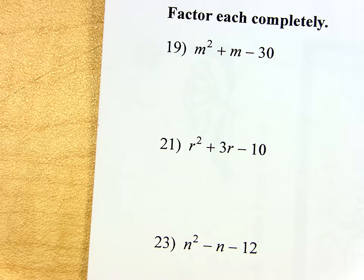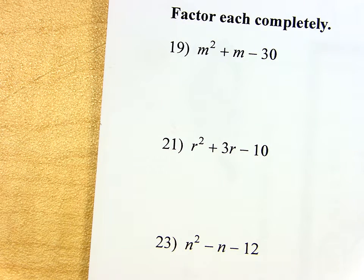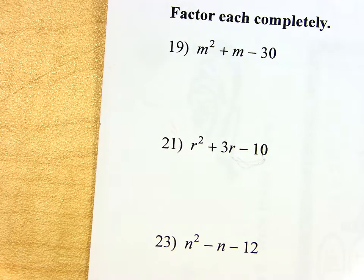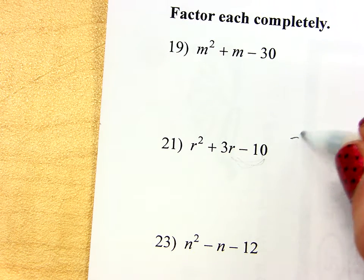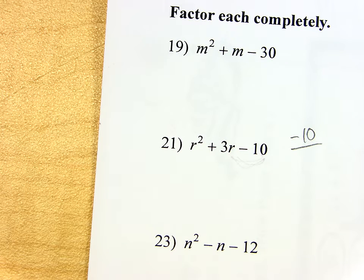This time, the steps are the same, but not everything is positive. I have C is now a negative 10. So, think about negative 10. What could multiply together to get me negative 10?